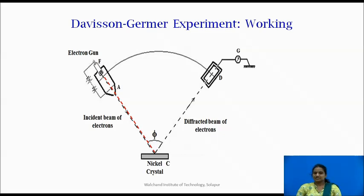These electrons were scattered by a nickel crystal located at C. The crystal can be rotated on the axis. The detector D measures the number of electrons scattered by the crystal in different directions. The detector could be moved on a graduated semicircular scale and thus the intensity of the scattered electron beam was determined as a function of the scattering angle phi.